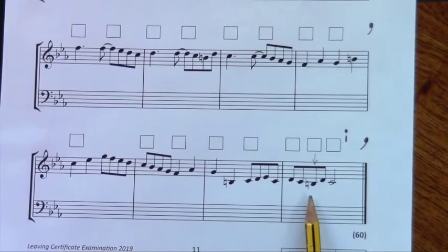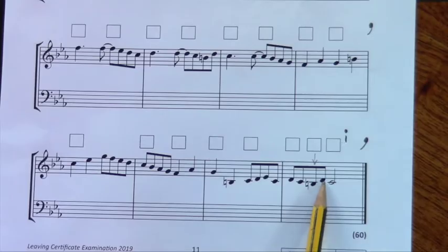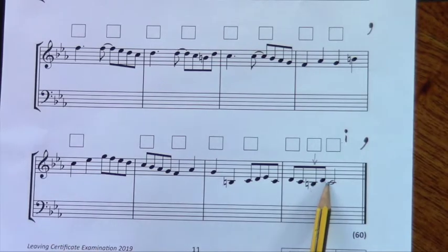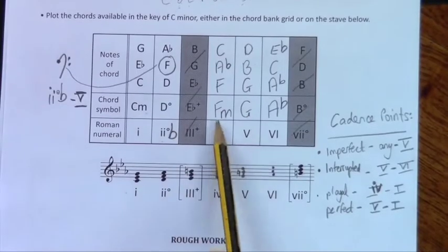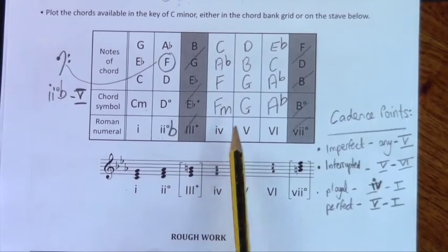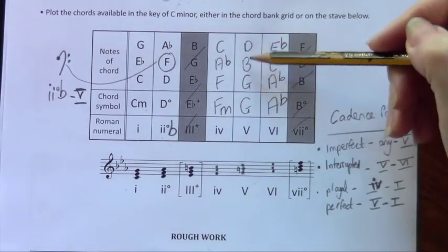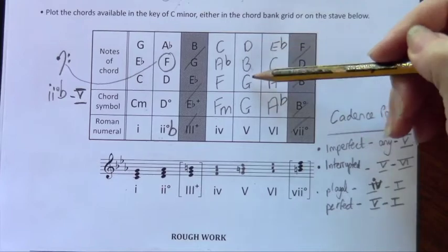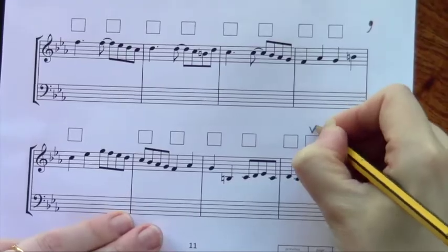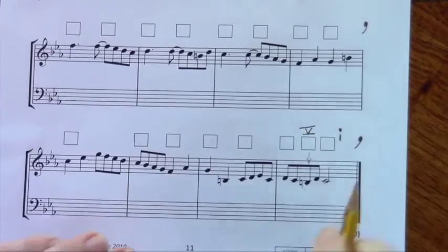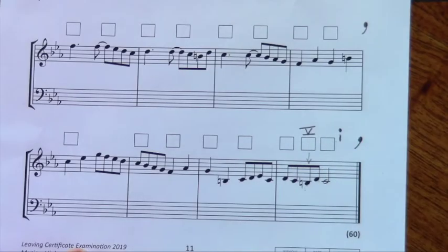Looking directly underneath the chord box, that's a B natural — I know because middle C is on the line and the note below it is B natural. So we have B natural and D. They're both leaping, so they're both important. A chord that has B and D in it: chord five has B and D in it. So I'm going to go with chord five. That is a perfect cadence — finishing on a perfect cadence.